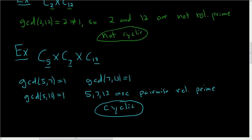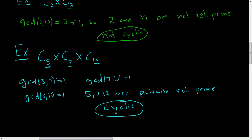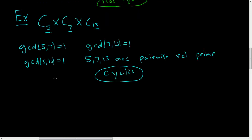If even one of the GCDs is not equal to 1, then it's not cyclic. It's got to be true for every possible pair — you have to get 1 for any possible combination of GCDs that you take.